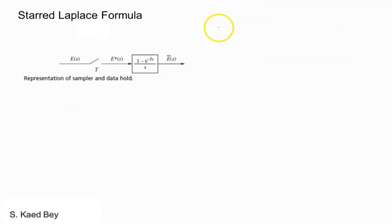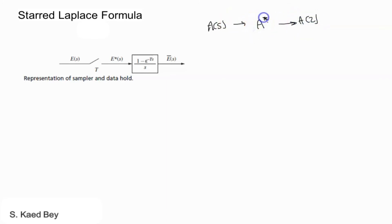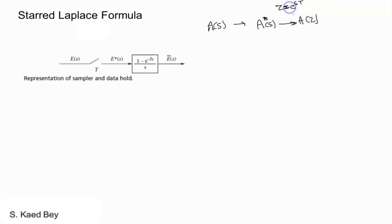Remember, one way to go from a function in the continuous time domain to the Z-domain is to go through e-star of s. We can then arrive at the Z-transform by substituting z equal to e to the power sT.